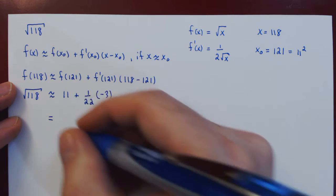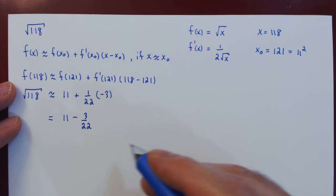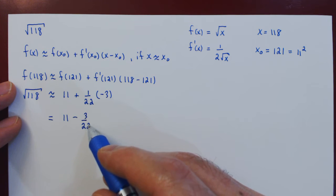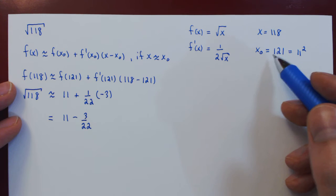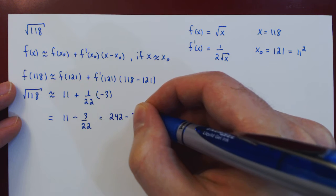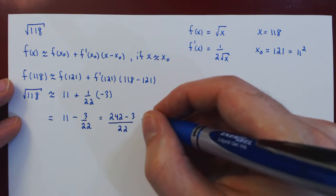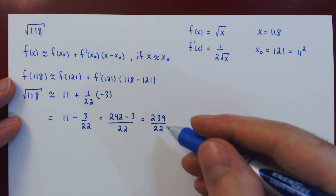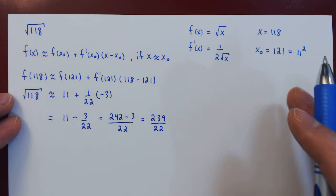So what we have is 11 minus 3 over 22. So we can write this as a single fraction by putting everything under 22. Well, think of 22 being 2 times 11. So 11 times 11 is 121, times 2 will give us 242. So we have 242 negative 3 over 22. 242 minus 3 is 239. So we now have, by hand, obtained a rational approximation to the square root of 118.